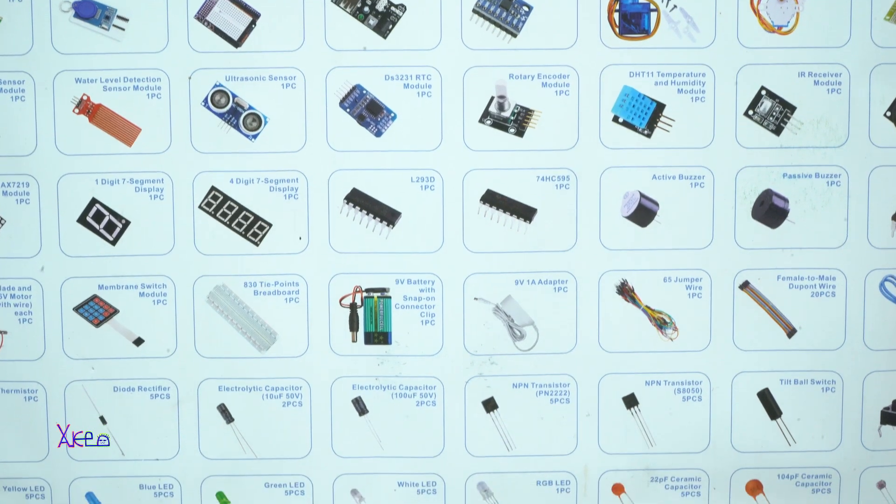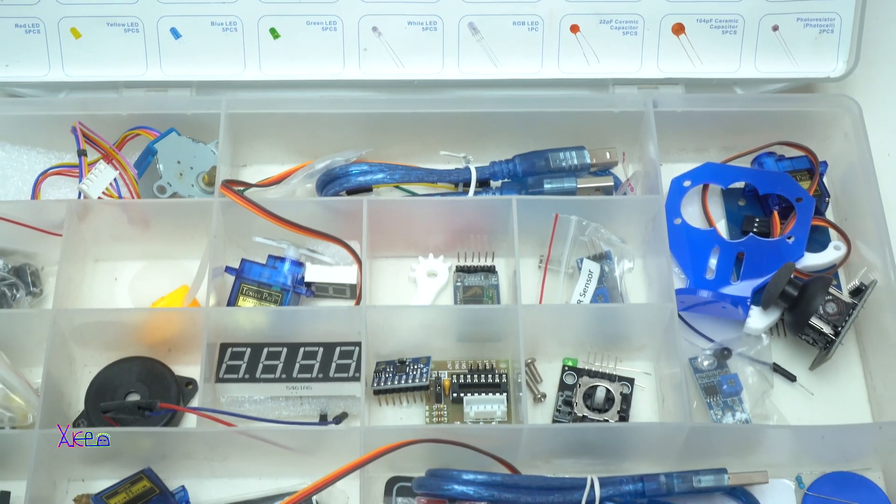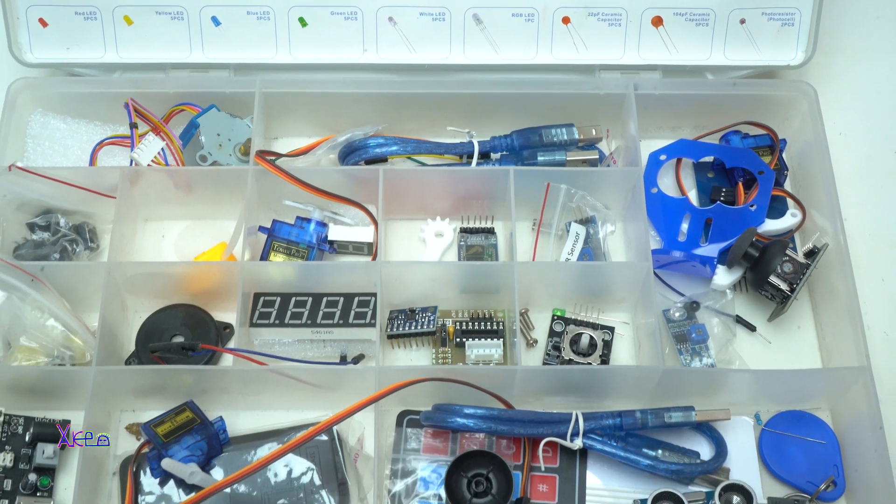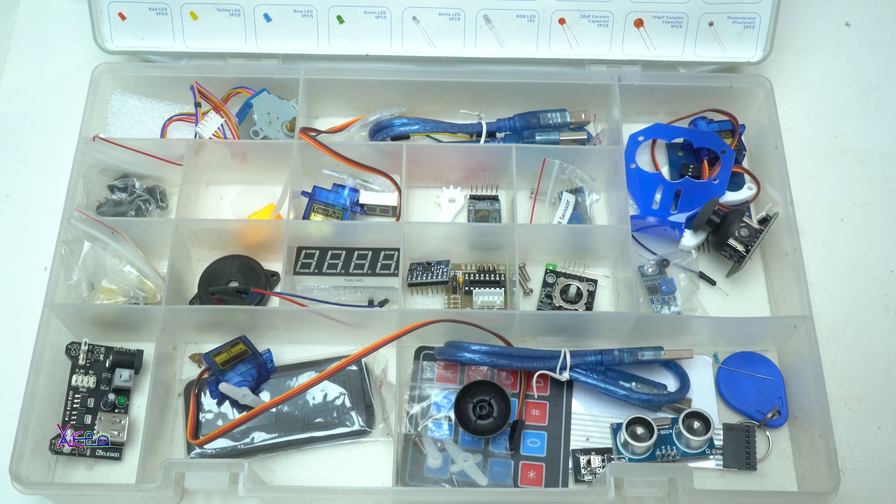Finally, a collection of electronic components is essential for any DIY Electronics Toolkit. Resistors, capacitors, LEDs and other components are the building blocks of any circuit.